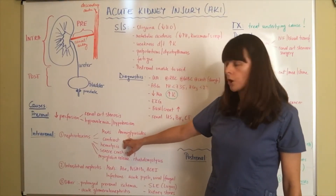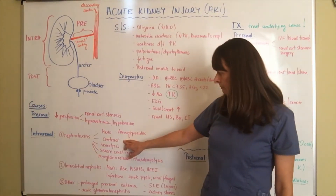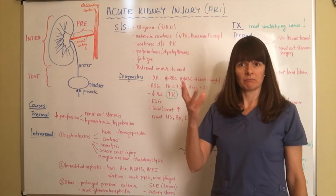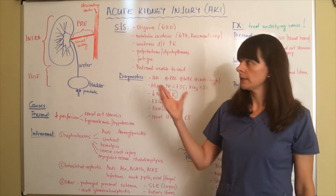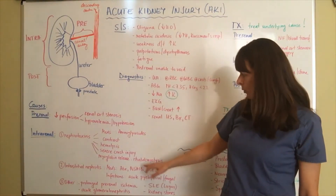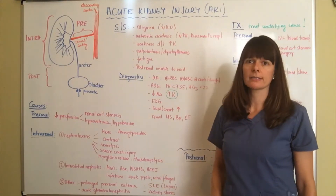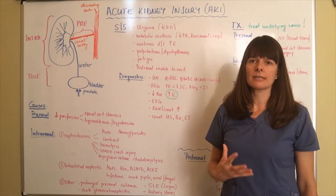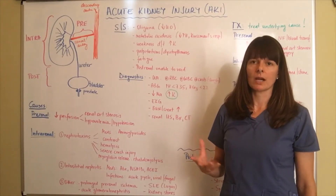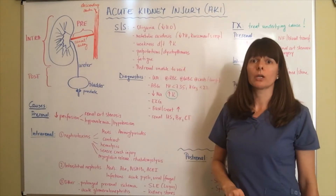Also notable is IV contrast, which for somebody who cannot tolerate it can lead to intrarenal failure. Hemolysis — where blood cells burst or explode — can lead to intrarenal failure because they clog up the kidney. Severe crush injuries operate on the same principle, as does myoglobin release seen in rhabdomyolysis, where excessive muscle tissue breakdown releases large proteins that clog the kidney's filtration system, leading to intrarenal failure.